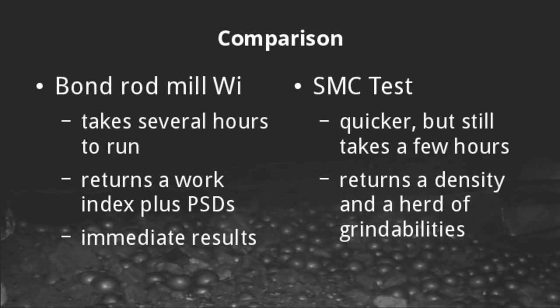For further comparison: the rod mill work index test basically takes all day to run, whereas the SMC test takes hours — not all day, but not particularly rapid either. You will finish more SMC tests in a given time period than Bond rod mill work index tests. Outputs of the rod mill work index test include the work index and particle size distributions of both the feed and product. You're ordinarily only going to read the 80% value off these PSDs, but as we'll see in the next slide you can get more out of them. The SMC test gives you a range of grindability metrics calibrated to particular equipment types, plus a density measurement for free.